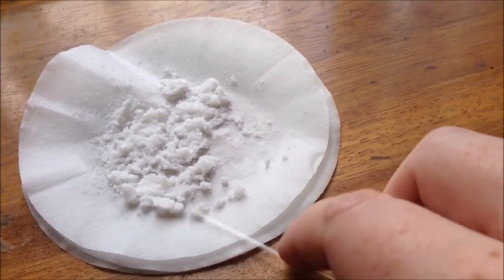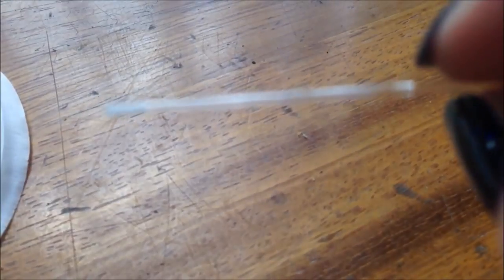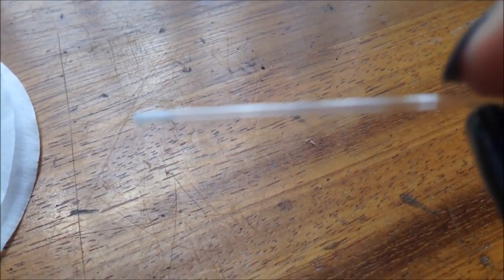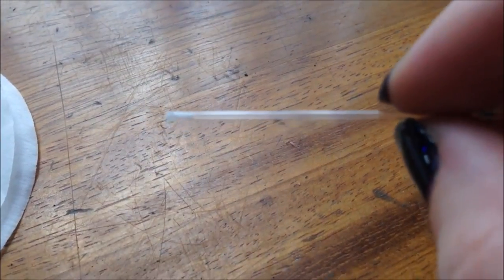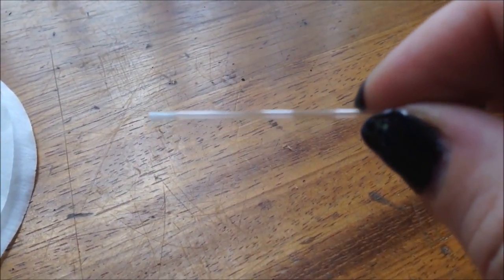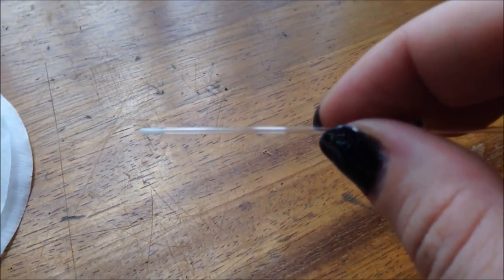You don't want to get stuff on the end, you just want it in the centre of the tube here. So there is about 5mm of my organic solid in this tube here.